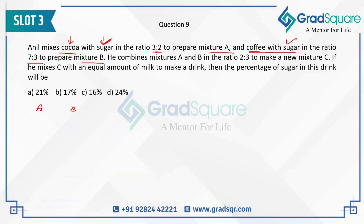What is the strength of sugar in mixture A? It is going to be two parts out of a total of five parts, so the strength of sugar is 2/5. The strength of sugar in mixture B is going to be 3/10.